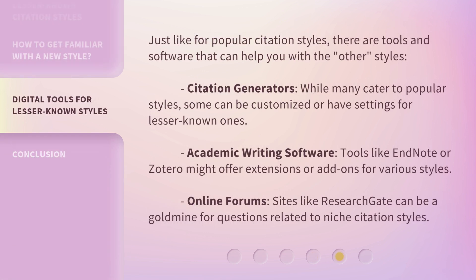Just like for popular citation styles, there are tools and software that can help you with the other styles. Citation generators — while many cater to popular styles, some can be customized or have settings for lesser known ones. Academic writing software — tools like EndNote or Zotero might offer extensions or add-ons for various styles. Online forums — sites like ResearchGate can be a goldmine for niche citation styles.